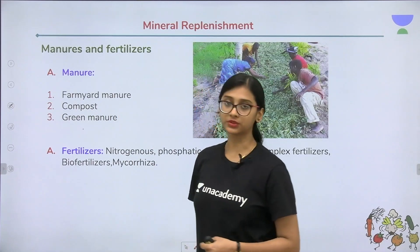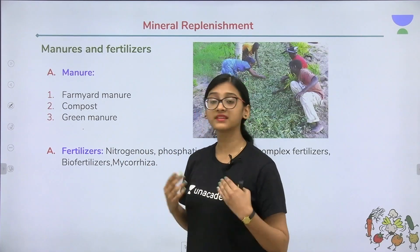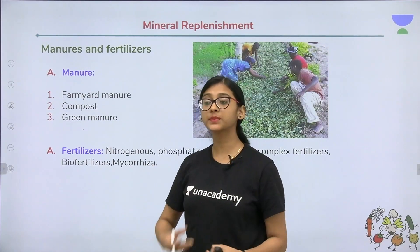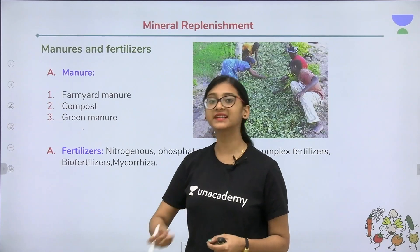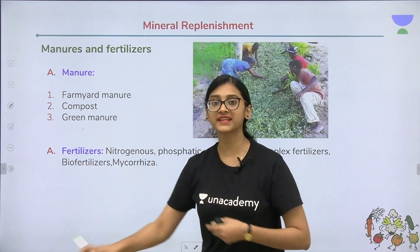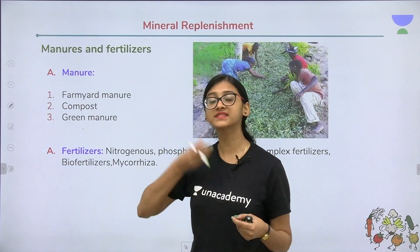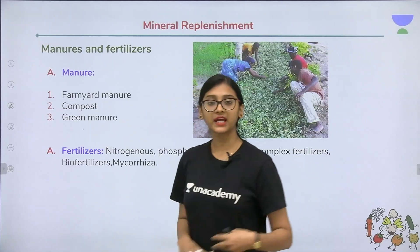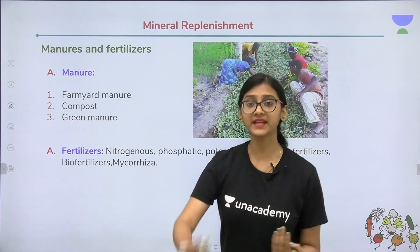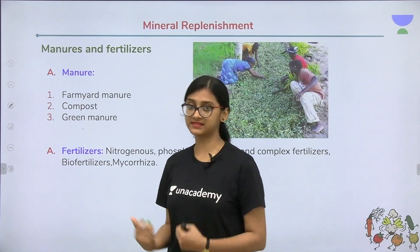Farm yard manure is nothing but the excreta, remnant fodder, or urine of cattle, which is introduced into crops to increase the nutrient value of the soil so that crops can acquire nutrients, especially NPK. Farm yard manure is produced in the farm yard by the cattle.